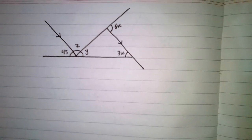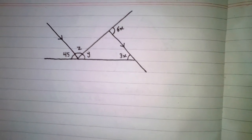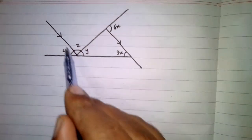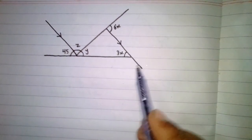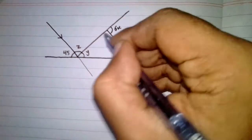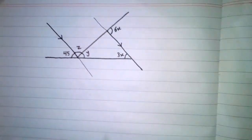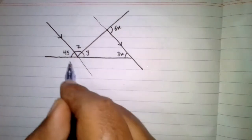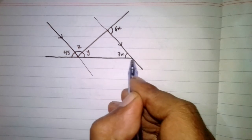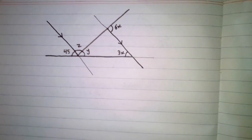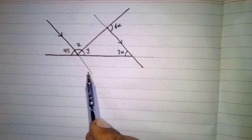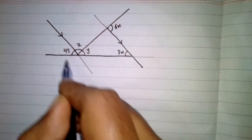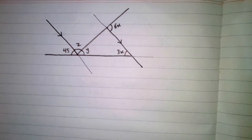In this video we are going to find out the value of X, Y, and Z. Here we have two parallel lines, and we can extend these lines to see that they are cut by a transversal. Now, if two parallel lines are cut by a transversal, then the corresponding angles are formed.